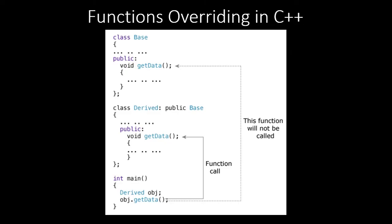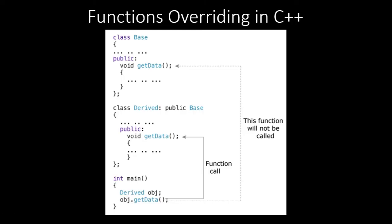The function is exactly the same but it is a case of inheritance. We recreate that function and give it new functionality — for example, printing a different value. In the main function, when you create an object of the derived class and call 'object.getData', the derived class function is called by default, not the base class one. However, you can still call the base class function if needed.